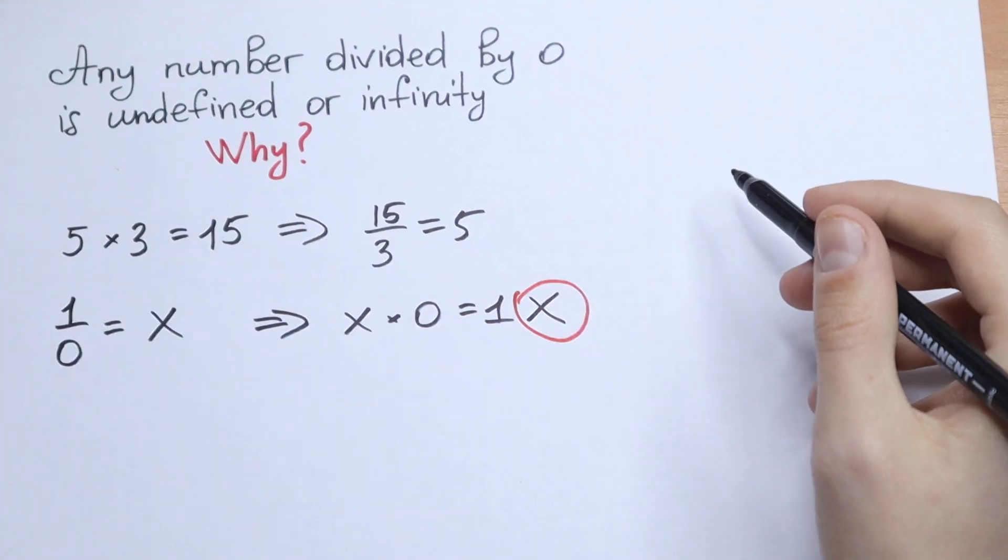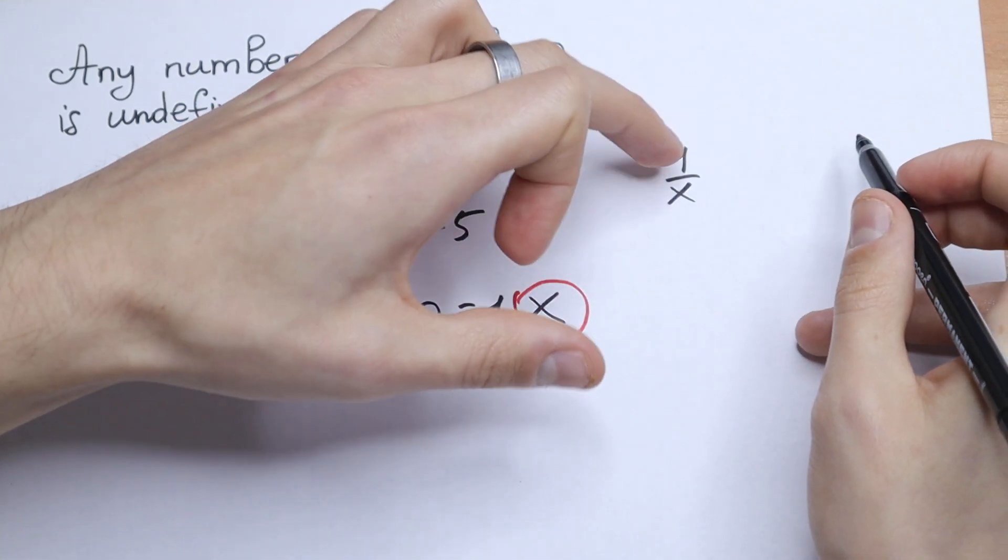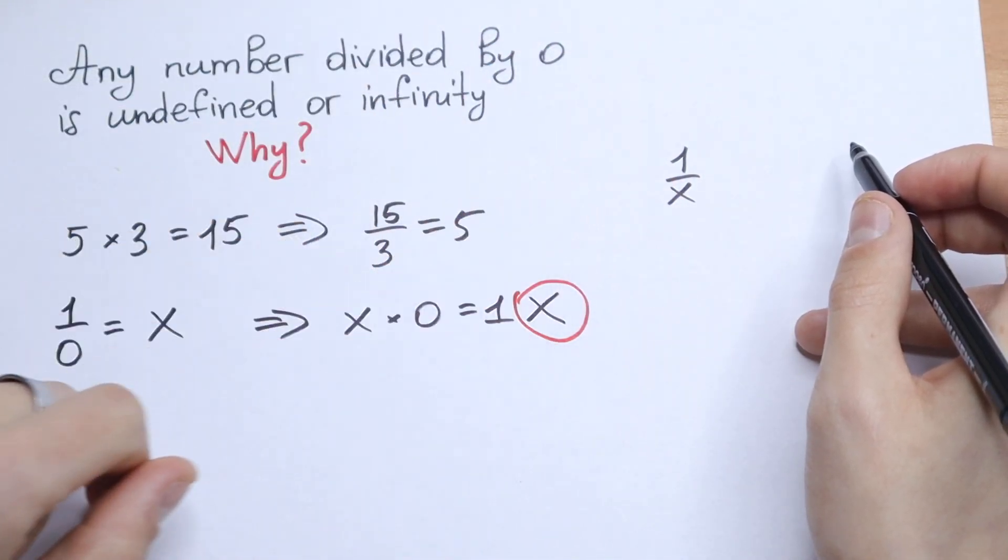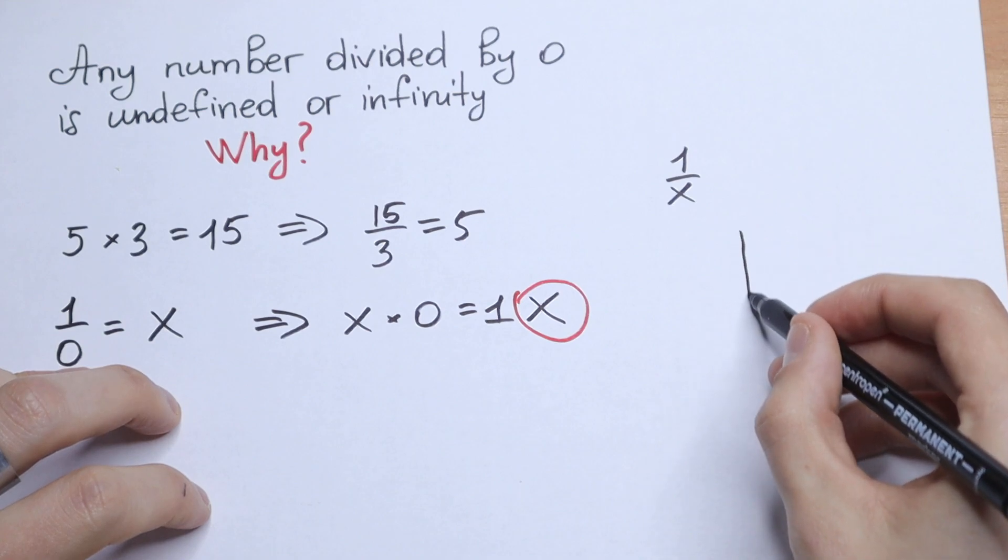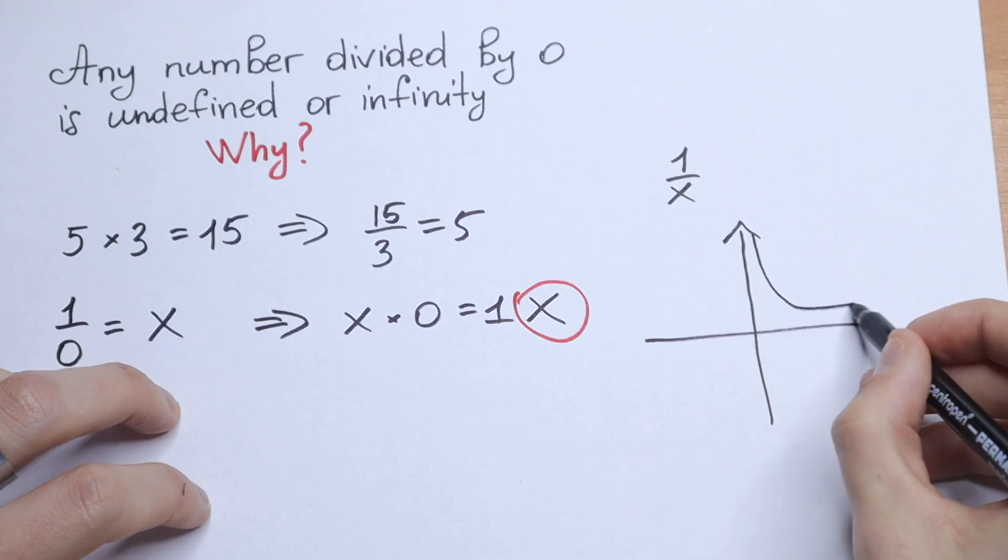Let's draw a graph. We have a graph 1 over x, 1 divided by x. When x equals 0, we will see what will happen at this point. So let's draw a graph. We all know how this graph looks like. This graph looks like that.